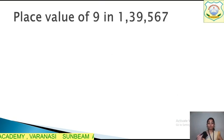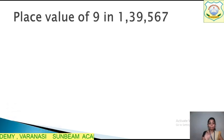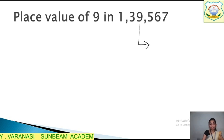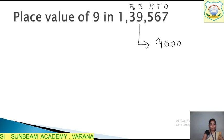Now for example, there is a question on place value. What is the place value of 9 in this number 1,39,567? Tell me the answer quickly. That is 9000. You can see here, this is 1s, 10s, 100, 1000, 10,000 and lakh. So the place value of 9 is 9000.